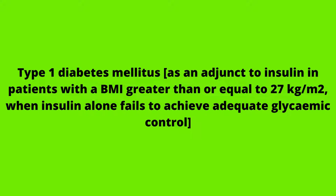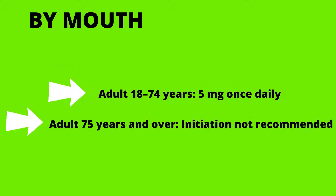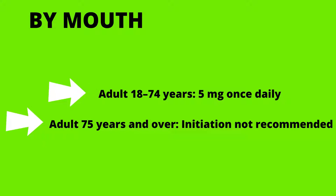This drug is also indicated in type 1 diabetes as an adjunct to insulin in patients with a BMI greater than or equal to 27 kg/m², when insulin alone fails to achieve adequate glycemic control. In adults aged 18 to 74 years, the dose is 5 mg once daily. For adults 75 years and over, initiation is not recommended.